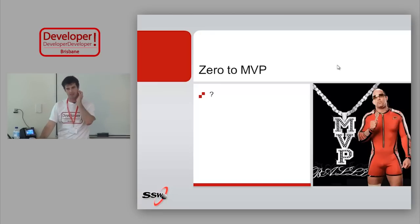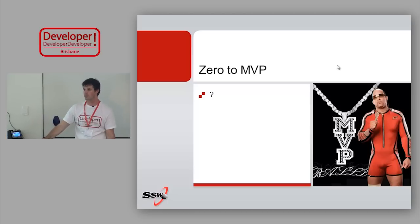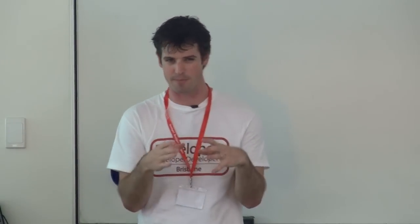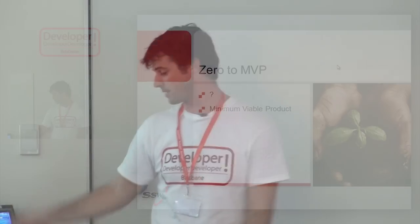Zero to MVP. MVP stands for minimum viable product — it's the smallest amount of work you can do to make something a viable product. So if your boss comes to you and says I want you to do this, it's the smallest amount of work you could get away with to do that. And obviously from that point you'd build on and build up a decent application. But in a lot of cases it's really important to spin up something as quickly as you can, get it there and prove that it works.